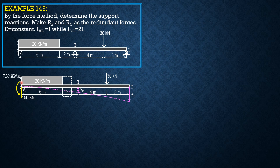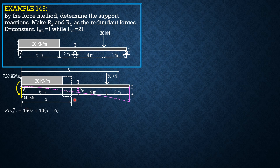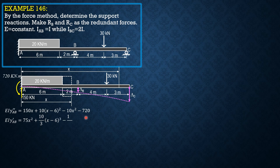Let's work only on portion AB because for portion BC the moment of inertia is 2I. So in this section, call that x. EI y double prime equals 150x plus 20 times (x minus 6)(x minus 6)/2, so 10(x minus 6) squared minus 10x cubed over... minus 720 this moment. So EI y prime AB equals 75x squared plus 10/3 (x minus 6) cubed minus 10/3 x cubed minus 720x. There is no C sub 1 because this is fixed; the slope at the origin is 0.